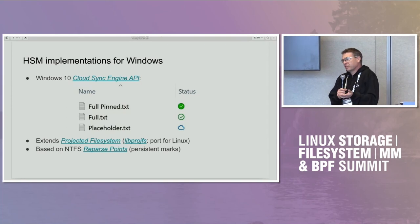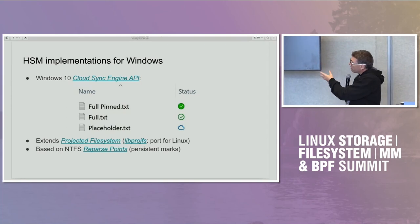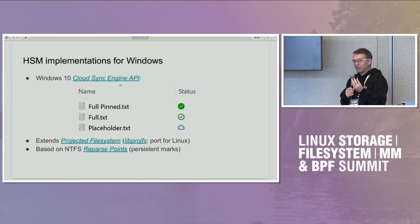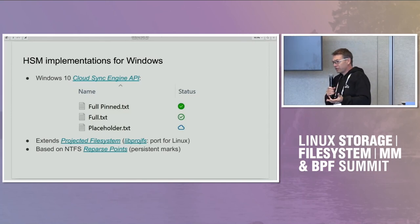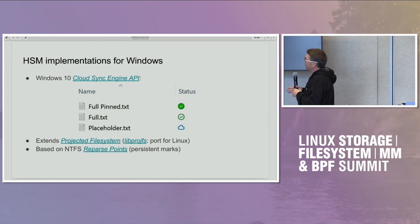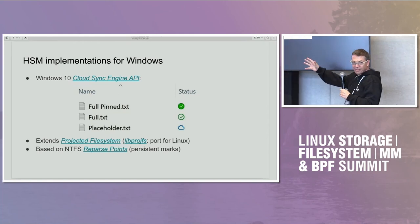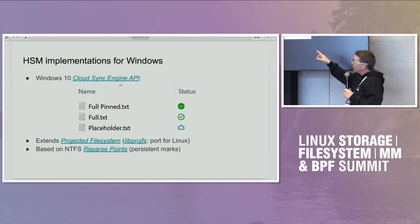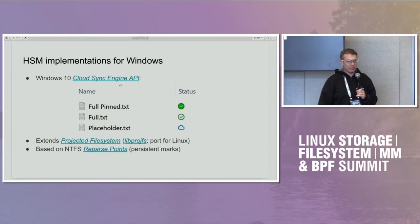Windows is an example of an operating system that has an API for this. If you've seen Google Drive or OneDrive, they have icons showing a file with a cloud — meaning the file is not available locally. If you access it, it gets downloaded from the cloud. The OS provides infrastructure: a file placeholder is marked with something called a parse point, a persistent marker. When the file is accessed, a driver gets called — that's the projected file system — which makes an up call to a cloud sync engine like Google Drive or OneDrive.